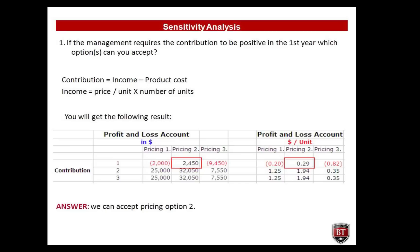Question number one: if management requires the contribution to be positive in the first year, which options can you accept? Contribution equals income subtracted by product cost, and income equals price per unit times number of units. The correct answer is we can accept pricing option two — the contribution is $2,450.